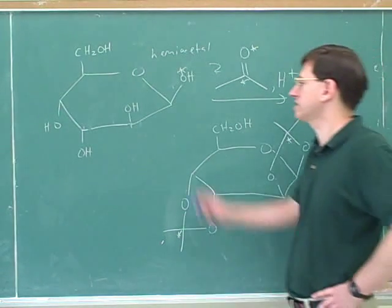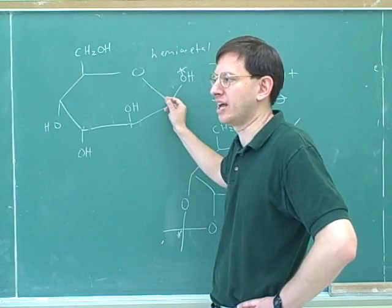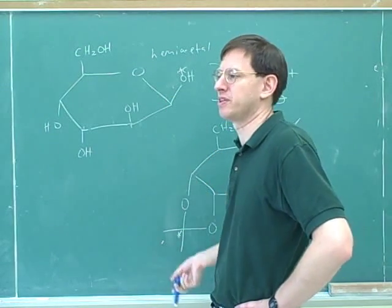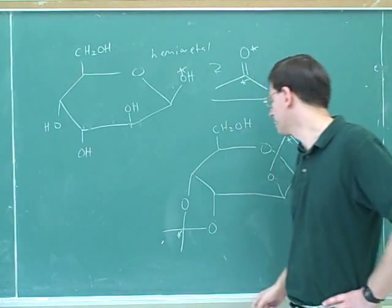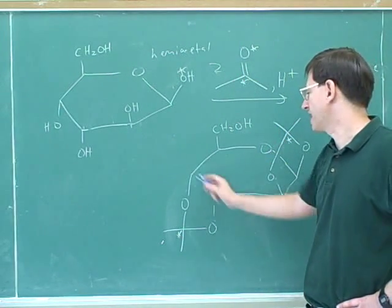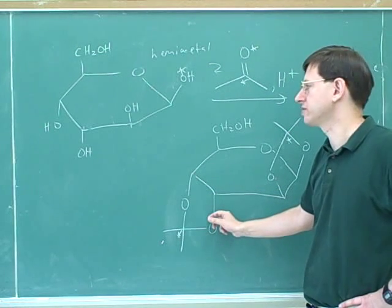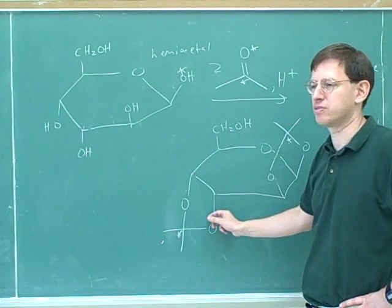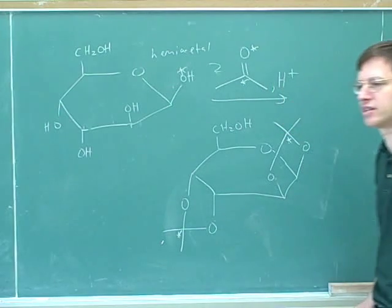We already talked about how we can protect just the anomeric carbon by making a glycoside. But what if you want to protect the other carbons? Well, this is another protecting strategy. We can form these types of cyclic acetals by adding a ketone. And this protects two adjacent alcohols that are pointing in the same direction.